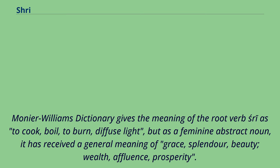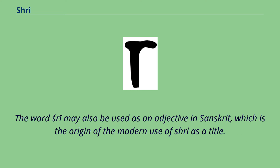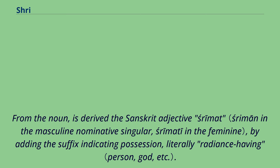The Monier-Williams dictionary gives the meaning of the root verb Shri as to cook, boil, to burn, diffuse light; but as a feminine abstract noun it has received a general meaning of grace, splendor, beauty, wealth, affluence, and prosperity. The word Shri may also be used as an adjective in Sanskrit, which is the origin of the modern use of Shri as a title. From the noun is derived the Sanskrit adjective Srimat, by adding the suffix indicating possession, literally meaning 'radiance-having.'